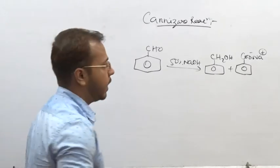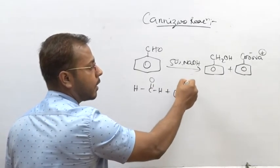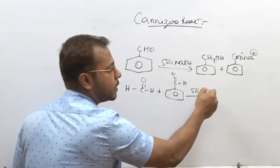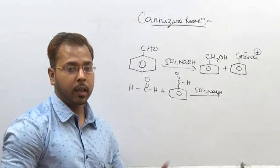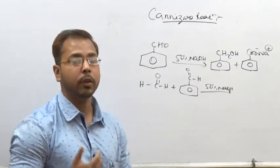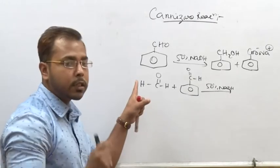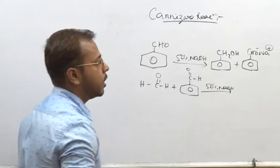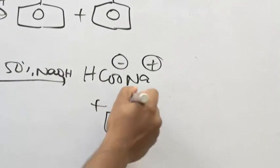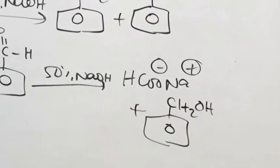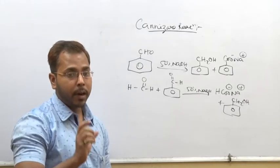The important question is: when formaldehyde and benzaldehyde are both present with 50% NaOH, which molecule will be oxidized and which will be reduced? This is a very important question. The trick is: the molecule which is smaller will be oxidized. So sodium formate will be the answer for the oxidized product, and benzaldehyde being the larger one will be reduced to benzyl alcohol.